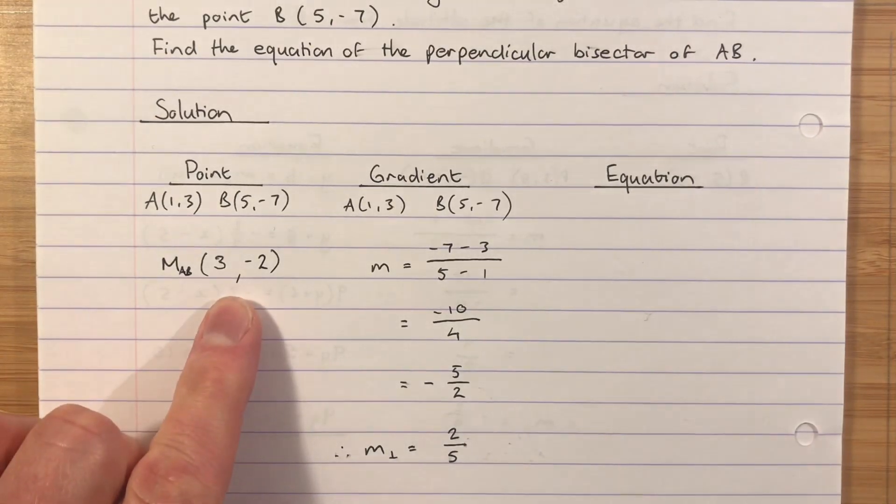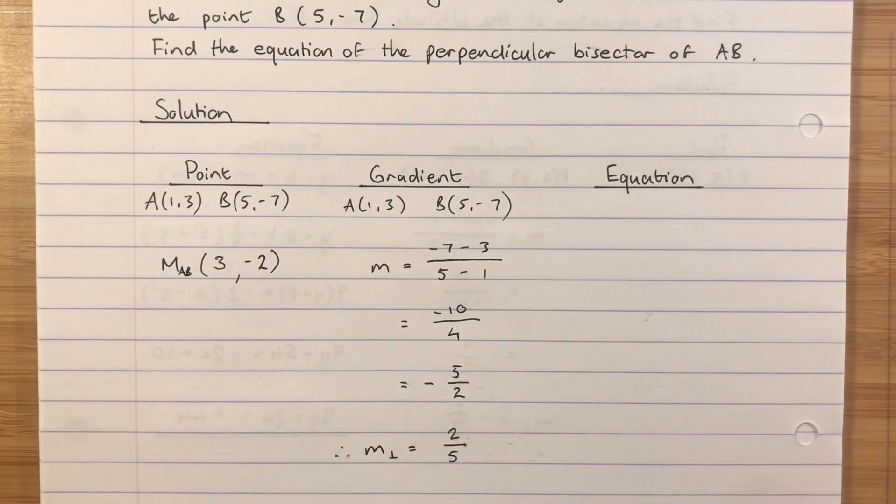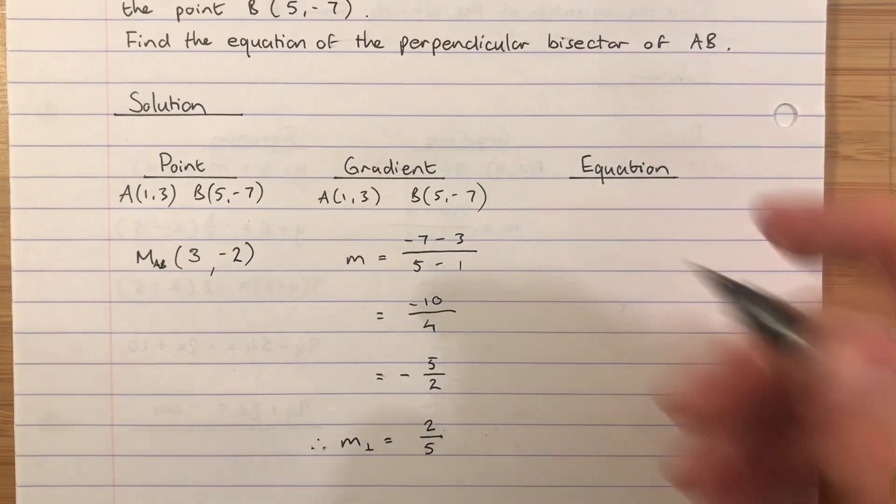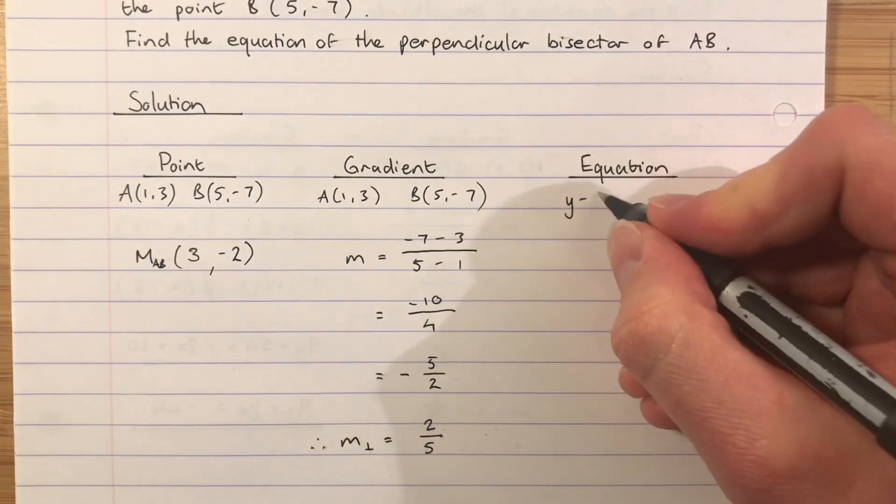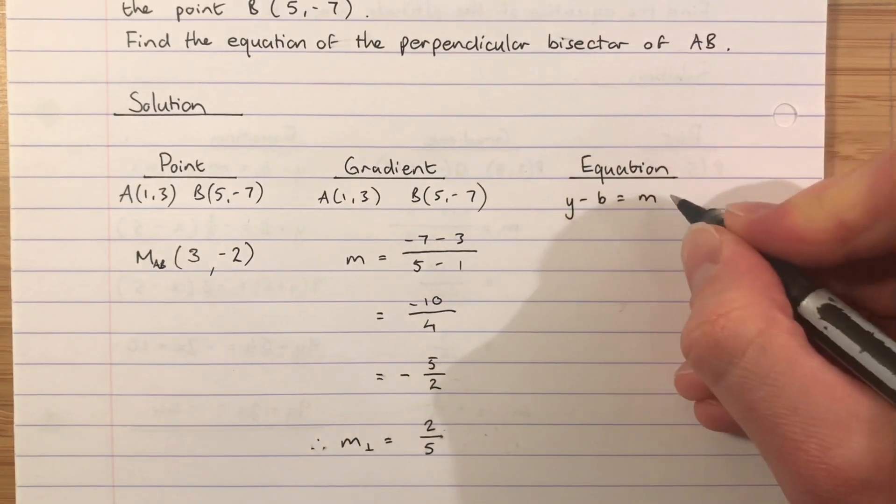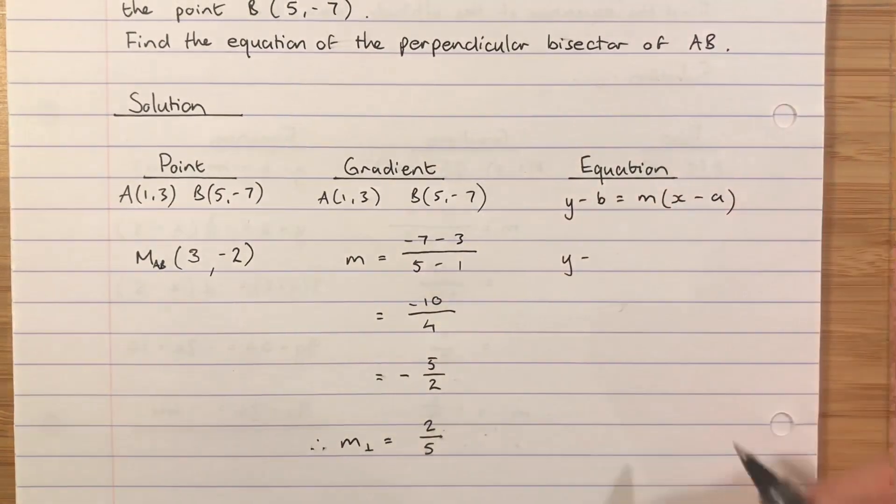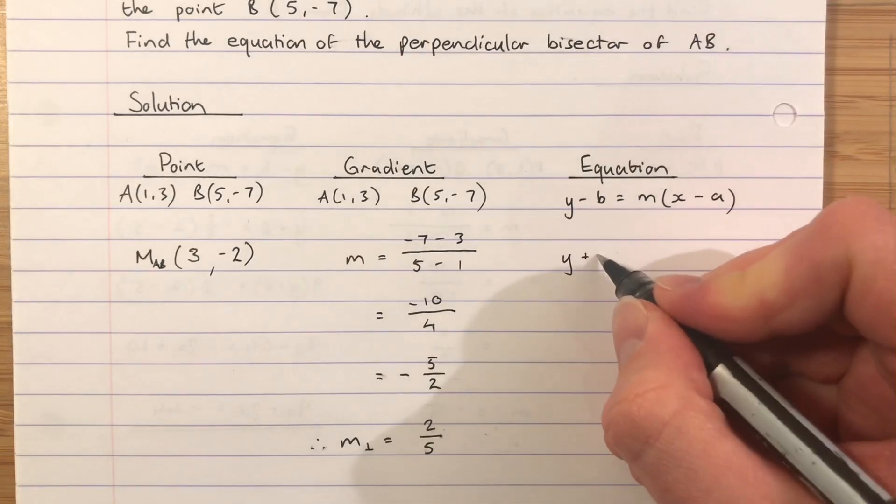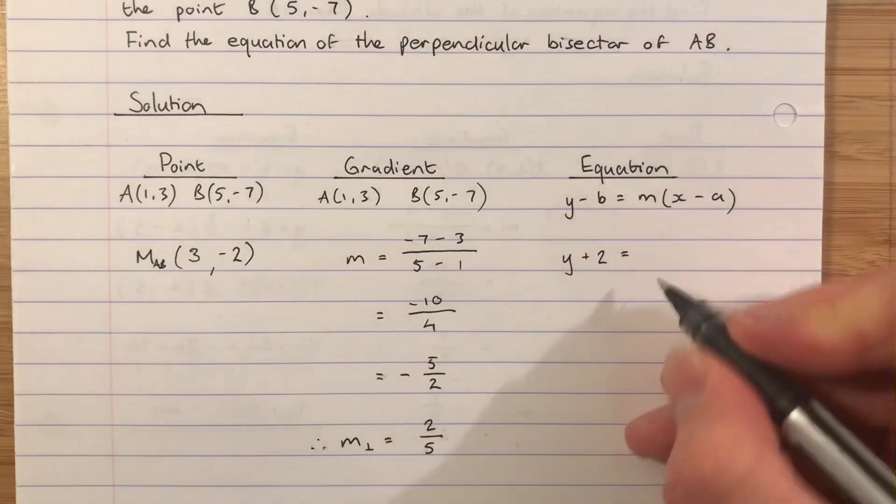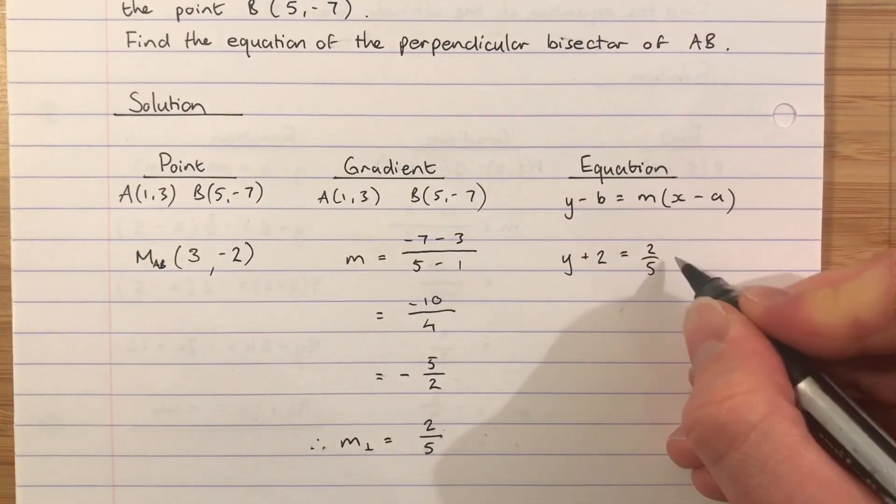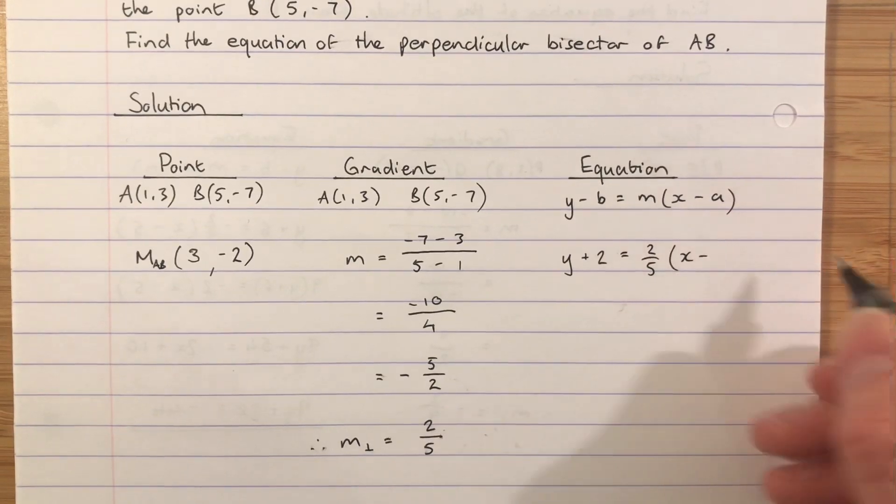So now that I have my point, and I have my gradient, I can find the equation. Y minus B equals M brackets, X take away A. Y subtract -2 is Y add 2. Equals 2/5, X subtract 3.